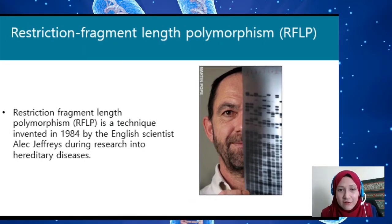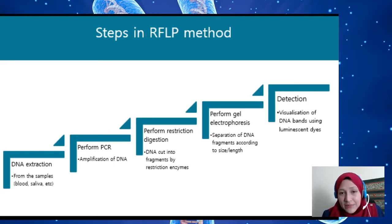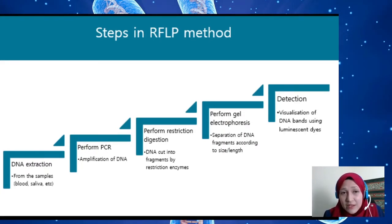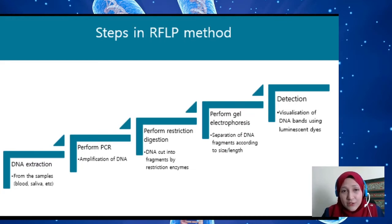The first method is Restriction Fragment Length Polymorphism, or RFLP, a technique invented in 1984 by Alec Jeffreys during research into hereditary diseases. The RFLP method consists of five steps: DNA sampling and extraction from blood, saliva, or buccal cells; amplification through PCR; cutting the DNA into fragments using restriction enzymes specific to the location of the genetic variation; gel electrophoresis to separate the DNA fragments by size and length; and visualization using luminescent dyes.